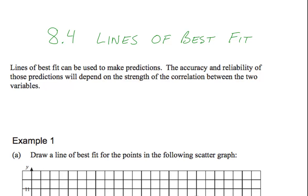8.4, Lines of Best Fit. Lines of Best Fit can be used to make predictions. The accuracy and reliability of those predictions will depend on the strength of the correlation between the two variables.